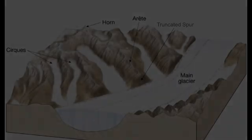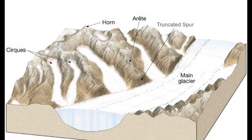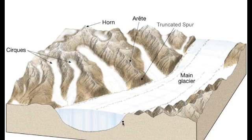Let's get into some vocabulary. First, the main glacier is the biggest part of the glacier, and then we have tributary glaciers — just like rivers, a tributary glacier is a smaller glacier that feeds into a larger glacier. Here's our big U-shaped valley, the large erosional valley that the main glacier formed as it bulldozed its way down the mountain.